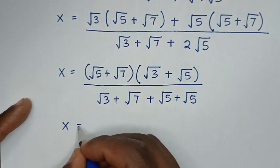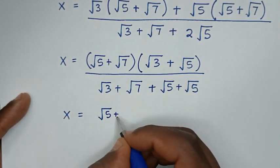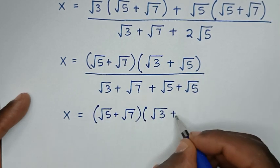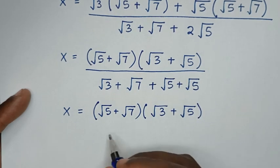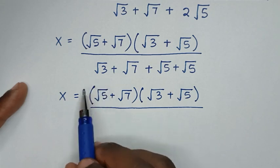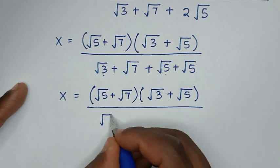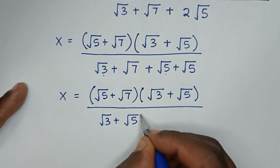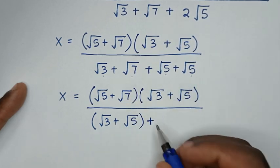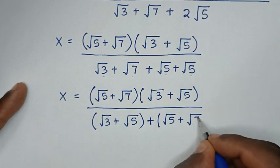Then x equals — from the numerator, it is (√5 + √7) × (√3 + √5). Then over — inside the bracket, (√3 + √5) is common, so it will be √5 × (√5 + √7).